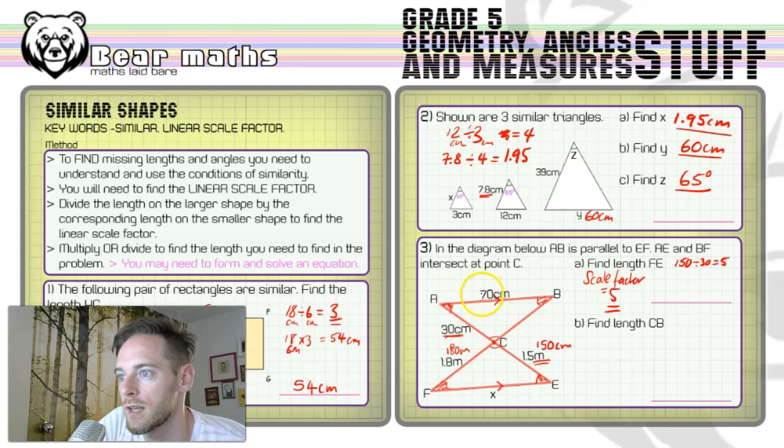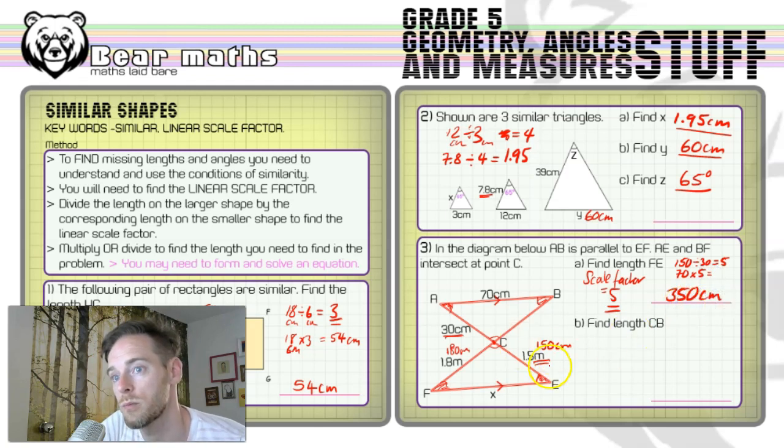So take the 70, the AB, because we know that's the one that corresponds with FE. And we times it by 5. And that would be 350 centimeters. Or if you wanted to put it in meters, you could divide by 100 to get 3.5 meters. I'll put 3.5 meters as another option, as an answer, because these ones were in meters originally.